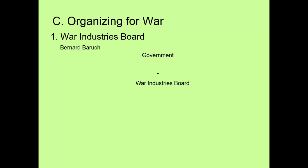Wilson puts Bernard Baruch in charge of the War Industry Board. The government needs to transition from consumer production to war production, and that is the job of the War Industry Board. The way they did that is the War Industry Board would go to mines, lumber companies, and farmers, allocate raw materials, and say to cotton producers: we need you to sell your cotton not to a factory that makes dresses, but to a factory that makes uniforms. Similarly, iron ore would go to steel mills supplying tank production instead of car production.